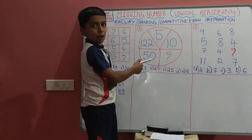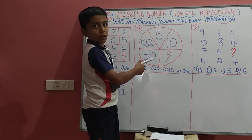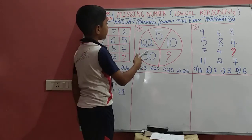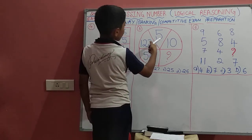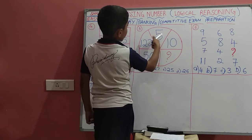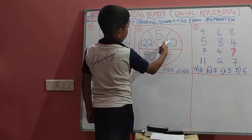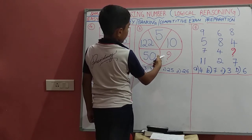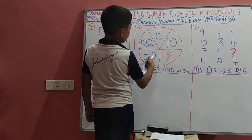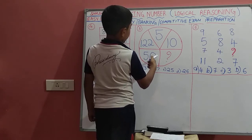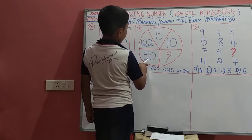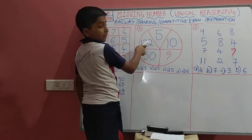Please pause the video and try the question by yourself, and we will discuss the answer. 5 into 2 is 10, 10 into 2 is 20, and 20 into 2 is 40. So we have to get 50.